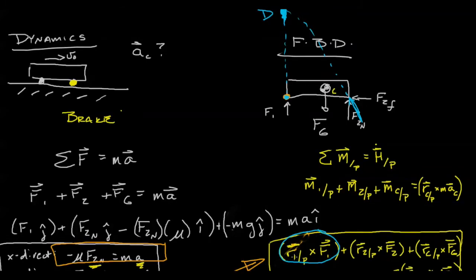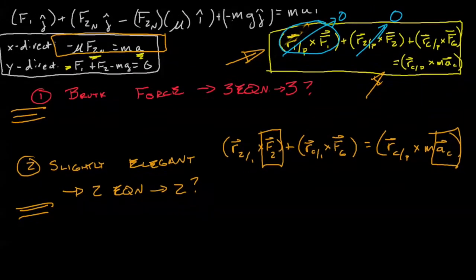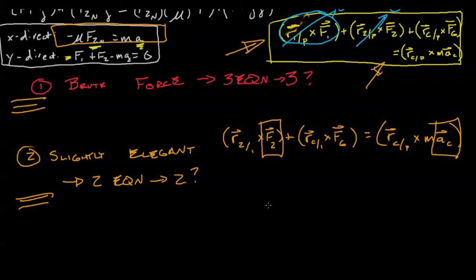So if we choose point d, we see this term go to zero, because this r1 cross f1, that's going to incur no moment. We see the same thing happen at point two. The equation we're left with in teal is simply the position from c to d cross the force of gravity equals the position from c to d crossed with the mass times the acceleration of c.